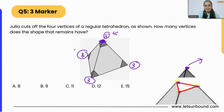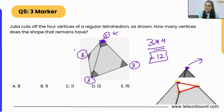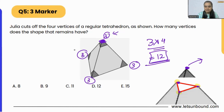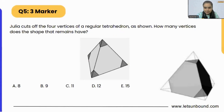So basically three plus three plus three plus three, or simply three times four, which is twelve. After Julia cuts off all four vertices from the tetrahedron, she will be left with twelve vertices. That means our correct answer is option D.